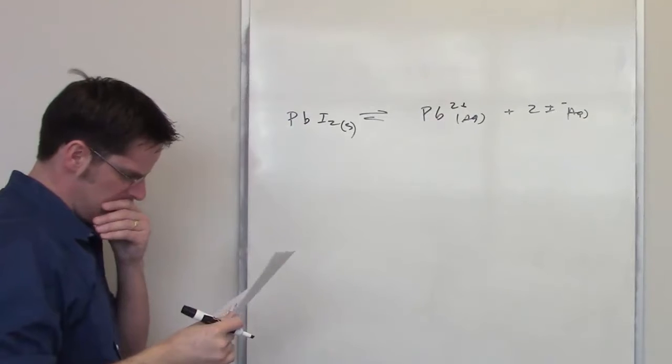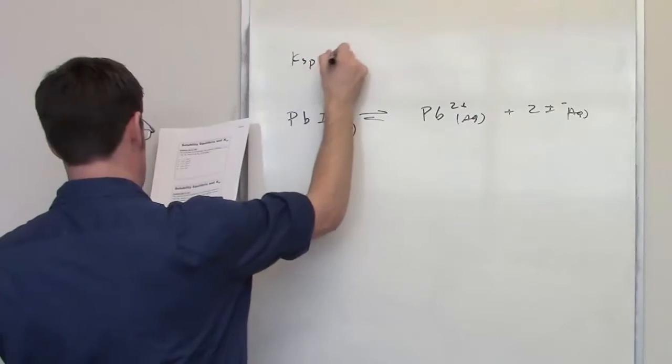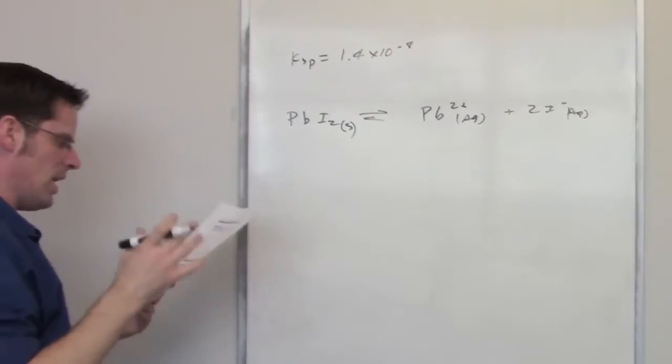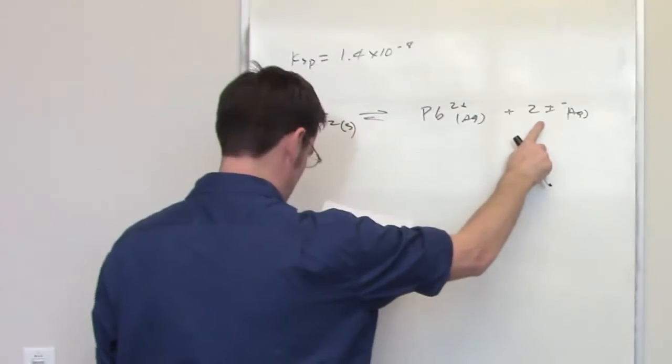It then gives me the solubility product Ksp as being equal to 1.4 times 10 to the negative 8th. It's asking me what is the concentration of iodide at equilibrium.